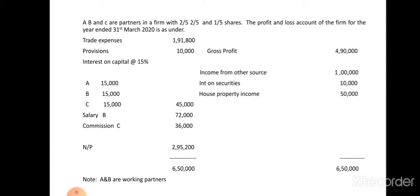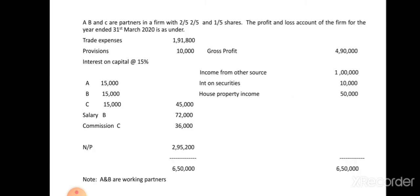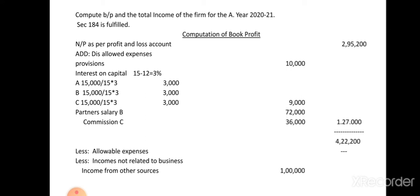Next, salary and commission paid to partners - if debited in the profit and loss account - are not treated as business expenses and must be disallowed. So salary of seventy-two thousand and commission of thirty-six thousand are disallowed. There are no further adjustments. The total of all disallowed expenses is one lakh twenty-seven thousand, giving a running total of four lakh twenty-two thousand two hundred.